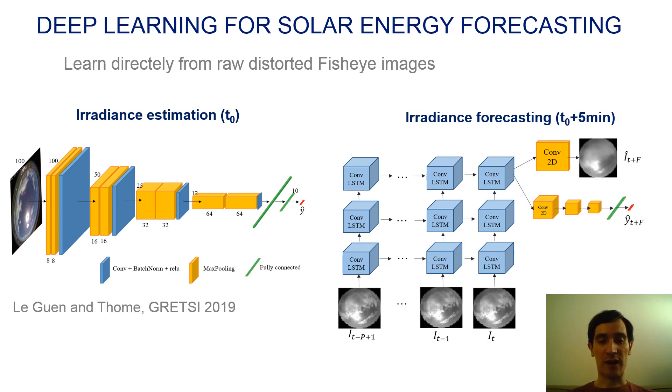Previous works have shown that deep neural networks can achieve promising results for both the irradiance estimation and the irradiance forecasting task with ConvLSTM. Still, extrapolating cloud motion is a very hard weather forecasting problem. In this work, we incorporate prior physical knowledge on the cloud motion to regularize deep neural networks.